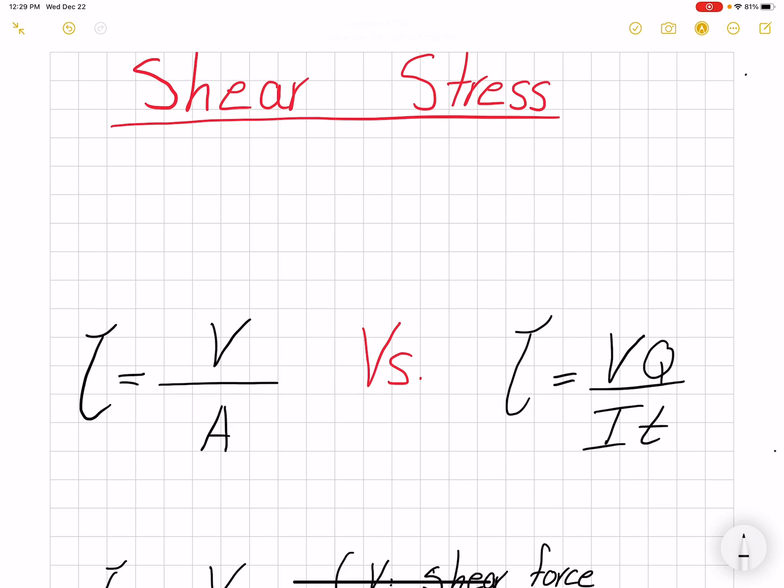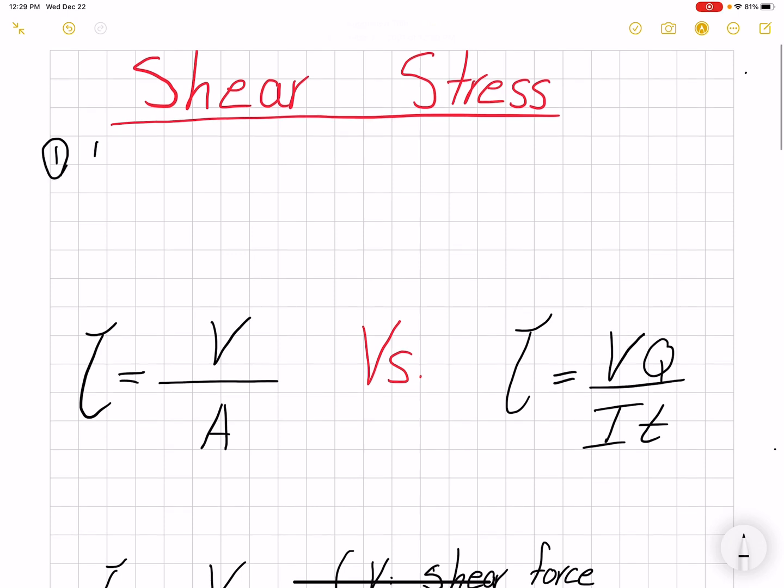In general, shear stress can be caused by torsion, where the equation is Tc over J. So if you have a beam which is under torsion,